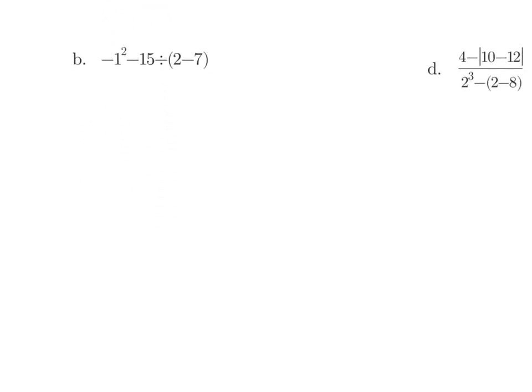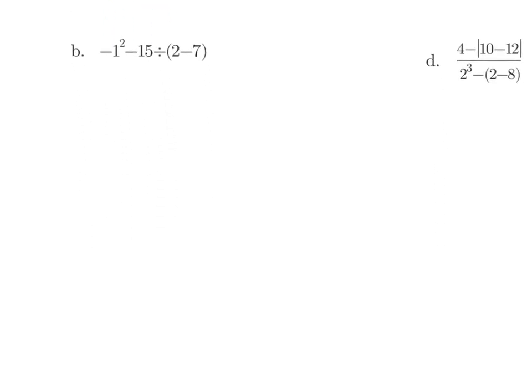Let's look at example b — this is another one to pay special attention to. We have negative 1 squared minus 15 divided by 2 minus 7. So I'm going to start with my parentheses: 2 minus 7 is negative 5. My next step is going to be my exponents. Note here the minus is not inside parentheses, so this is going to stay negative. 1 squared is 1.